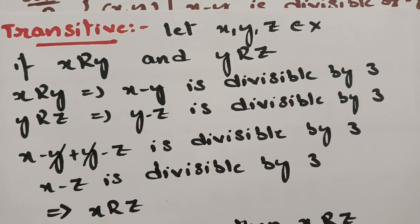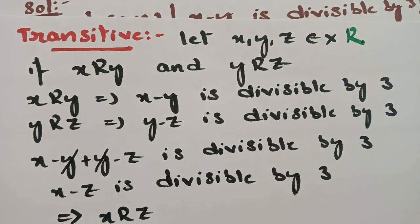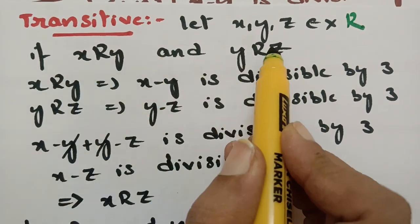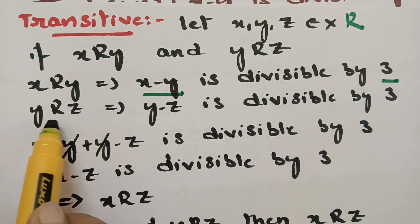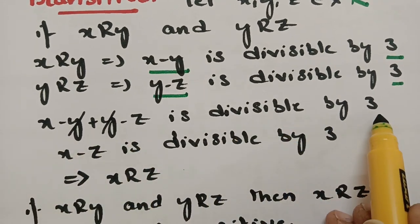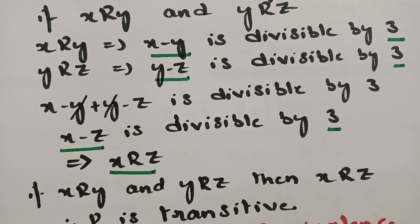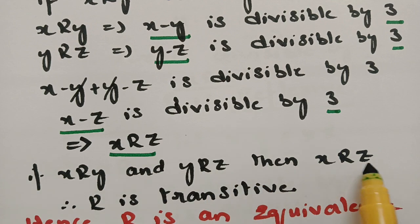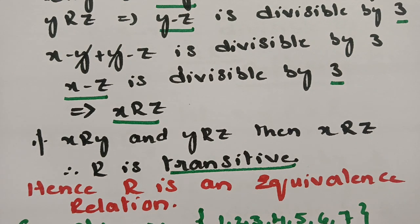For transitive: take (x, y) and (y, z) belonging to R. If x is related to y, then x minus y is divisible by 3. If y is related to z, then y minus z is divisible by 3. Their sum is also divisible by 3 — cancelling y, x minus z is divisible by 3. Therefore x is related to z. Hence R is a transitive relation, and therefore R is an equivalence relation.